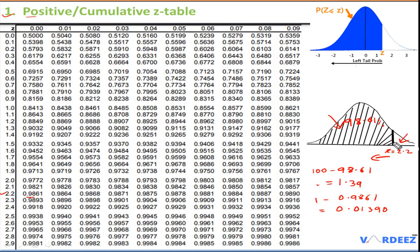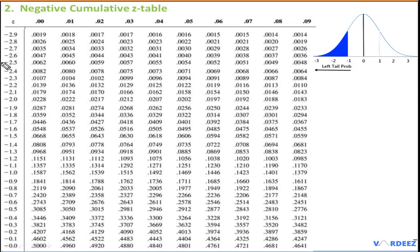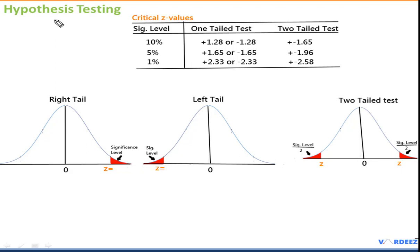We can confirm this by checking the negative z-table: looking up −2.2 with second decimal 0, we get 0.0139 — exactly the same answer we derived from the positive table. So with only the positive table you can solve any area-under-the-curve calculation on the exam.